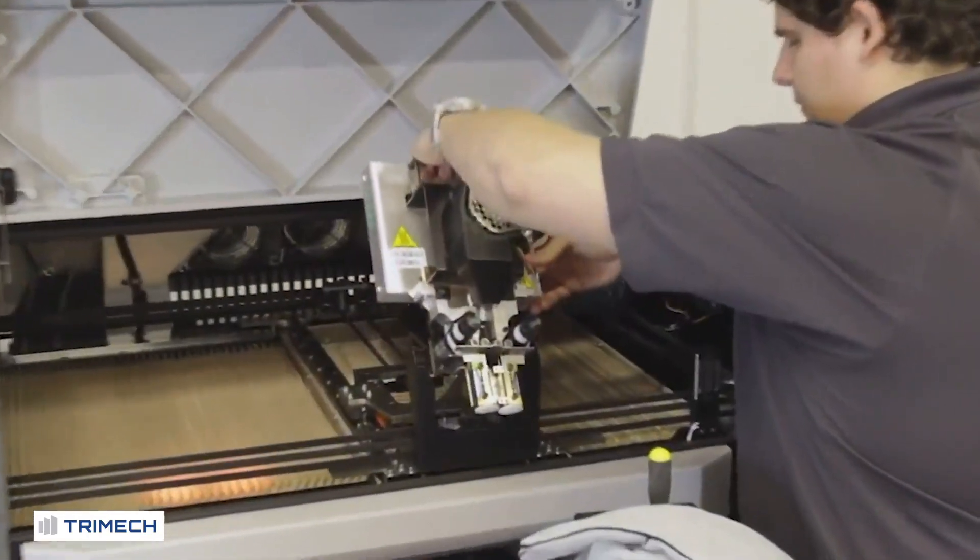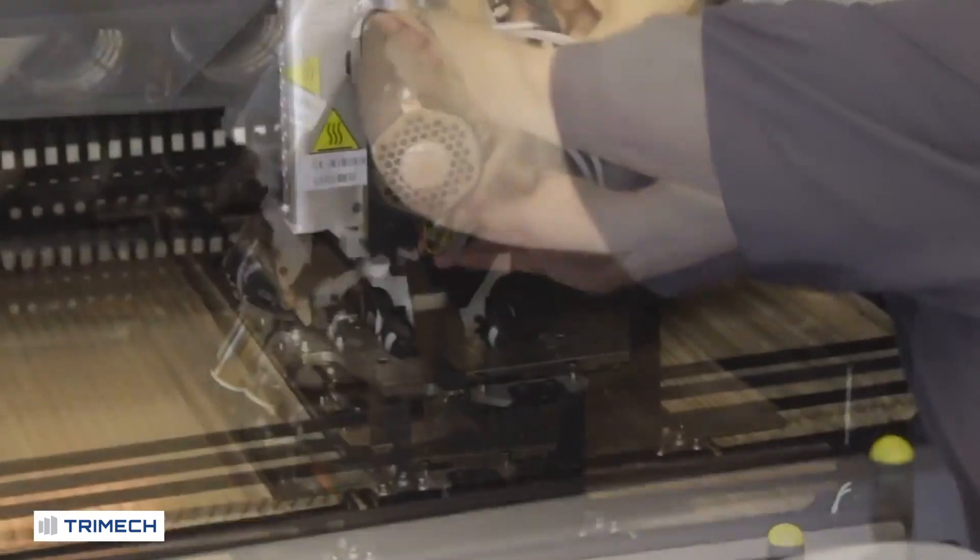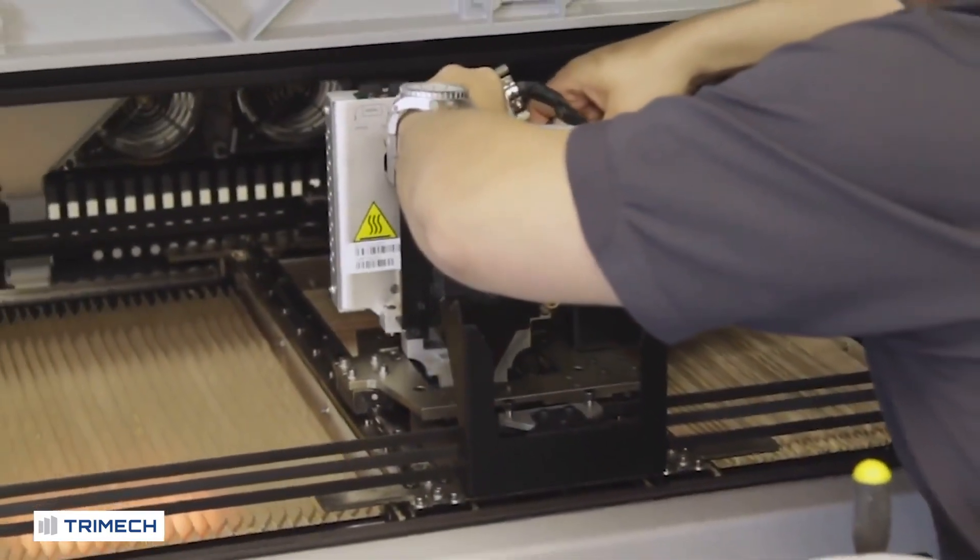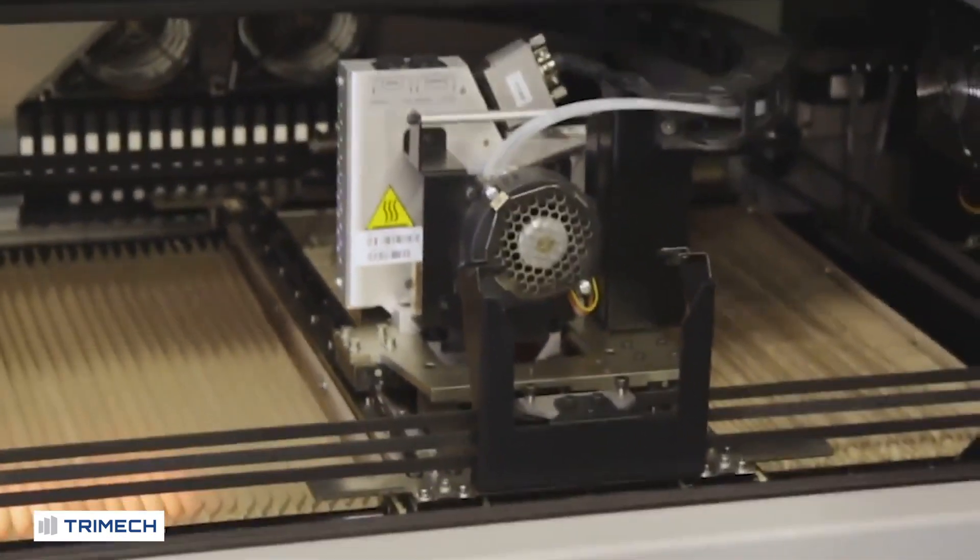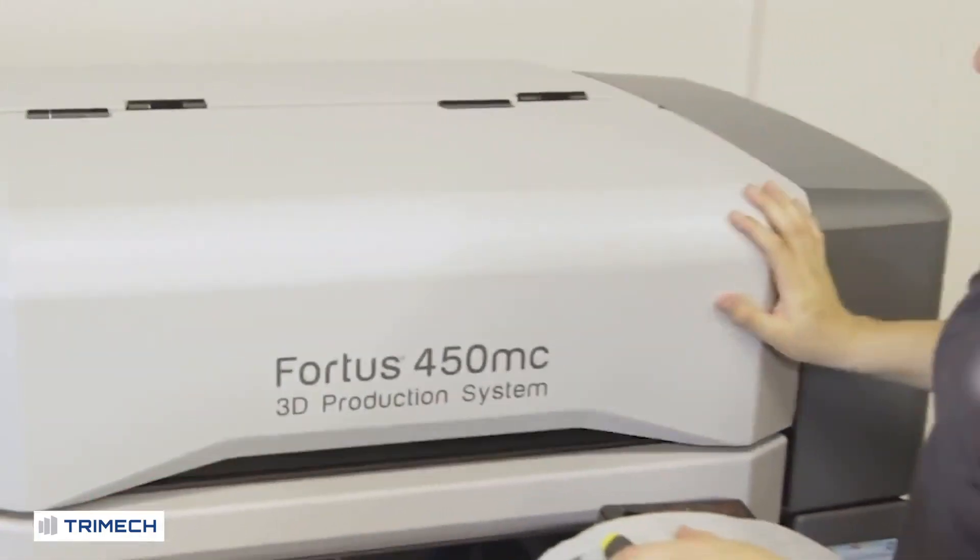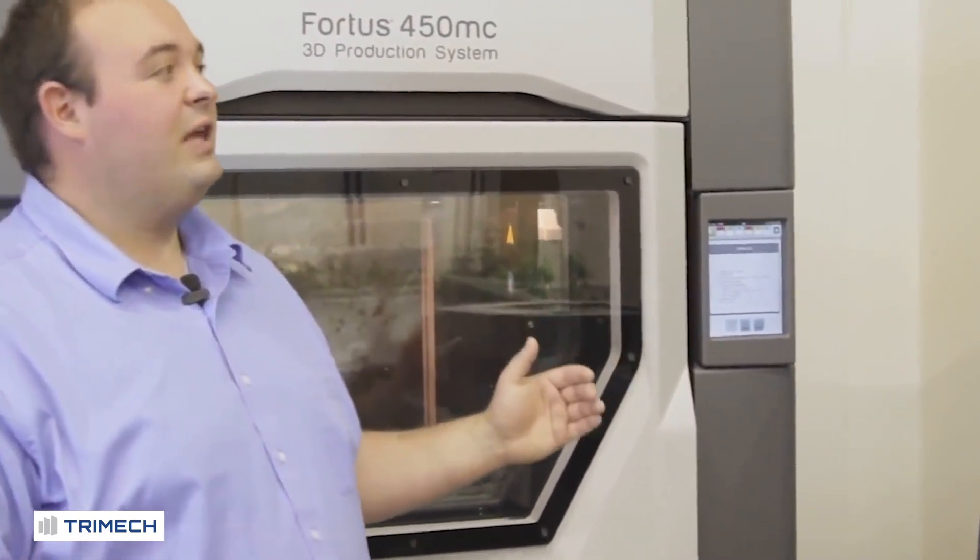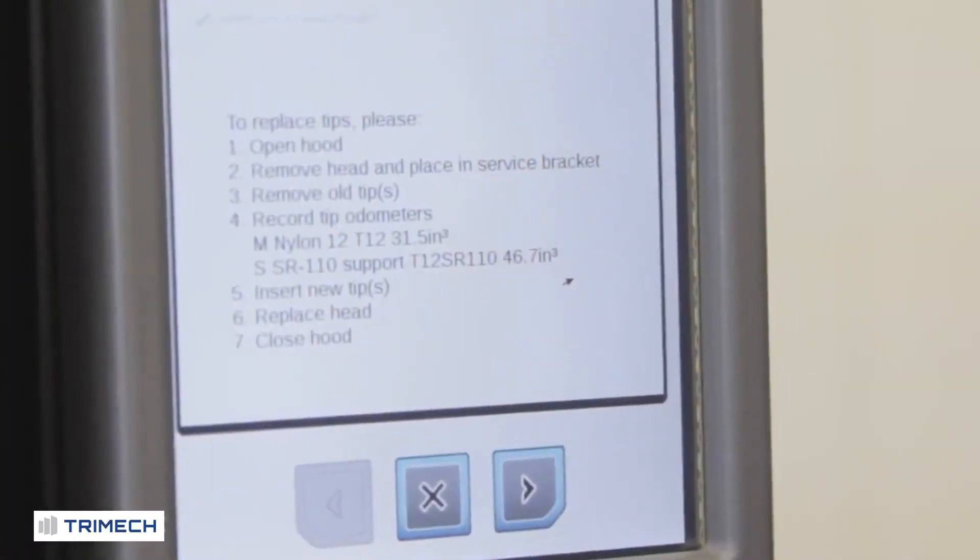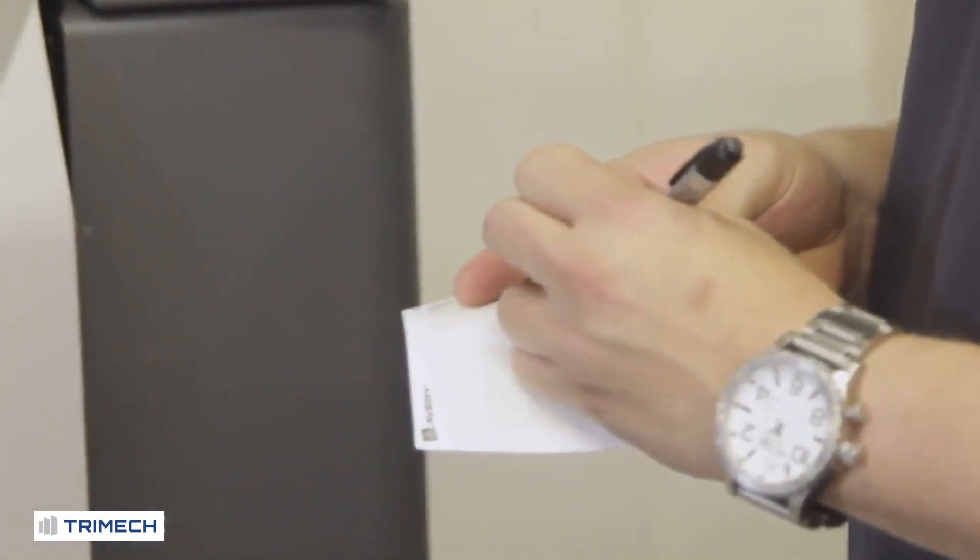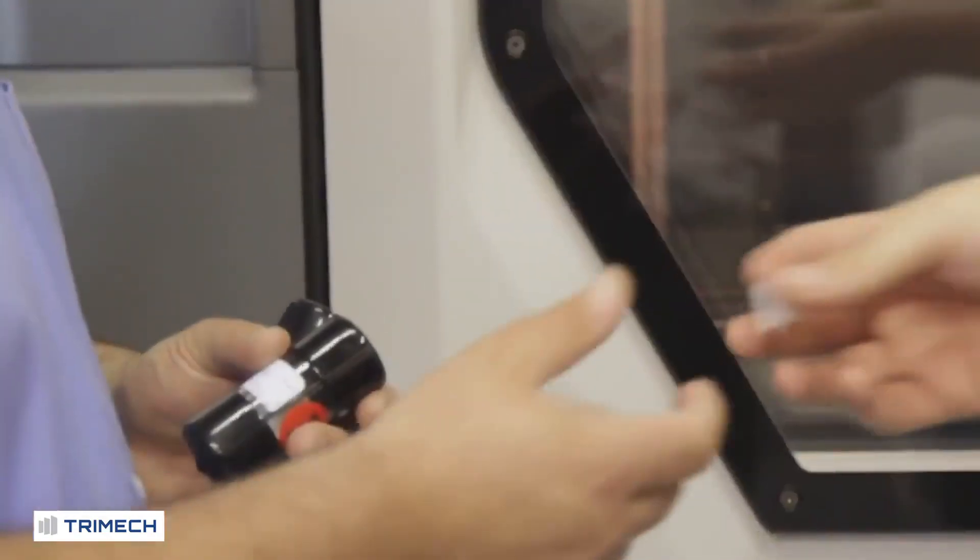Now that the new tips are installed, we can go ahead and place the head back into the printer. And now that the head is installed again, we can close the hood and move forward with our material swap. So now that the tips have been replaced and the head is installed back into the printer, we can go ahead and move forward with changing the material over. Before we do that though, we're going to make a note of our previous odometer reading, the amount of cubic inches of material that have moved through the old tips. So we can keep track of that in the future.